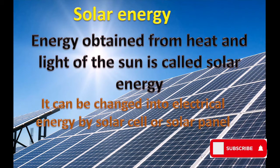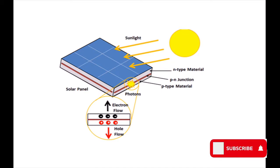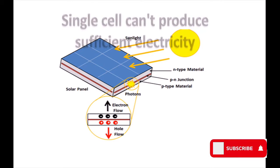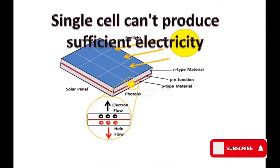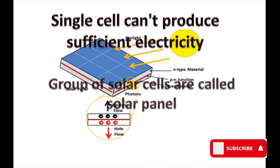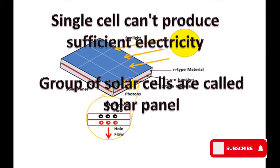A combination of solar cells is called a solar panel. A single solar cell can't produce sufficient electricity, producing only about 0.5 volts. Groups of solar cells are combined to form solar panels.